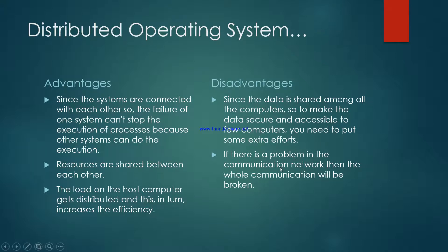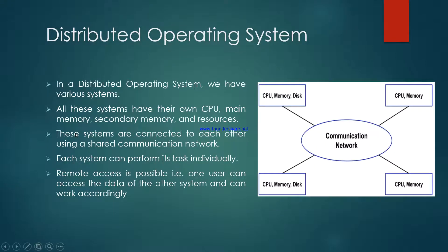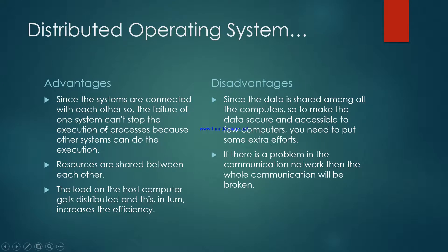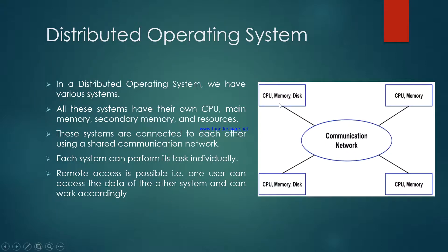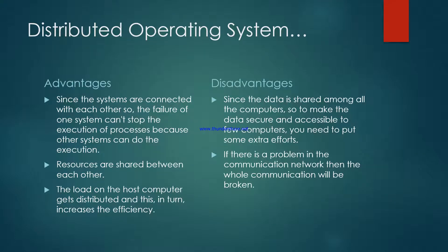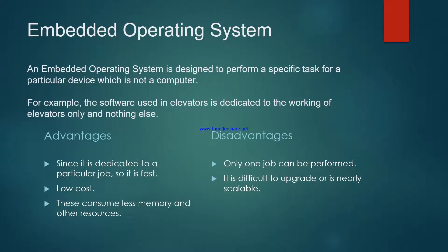If there is a problem in the communication network, then the whole communication will be broken. While one system failing does not affect process execution — since another system can take over — if the communication network breaks down, then the whole system will break down and our processes will not be able to execute. This is the main disadvantage of the distributed operating system.